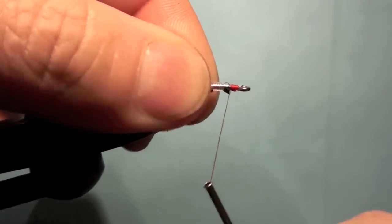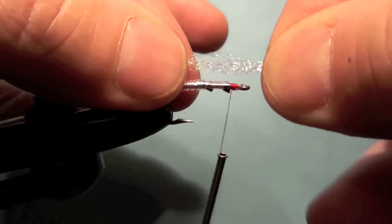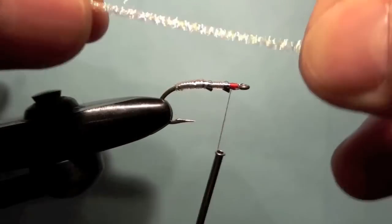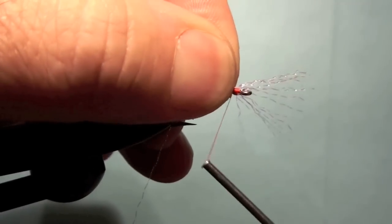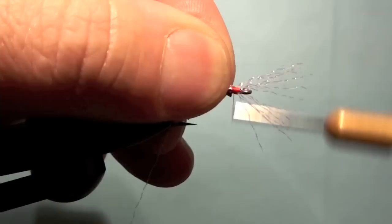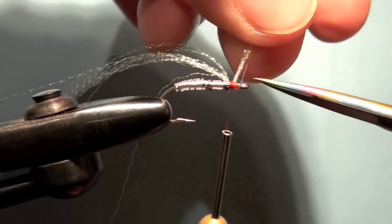And then we're going to take a little bit of pearl crystal flash. I don't know, four or five strands. This is pretty shiny stuff. Shows up well in the water. Just go ahead and bind that on. I leave the tag ends long for a reason so that I can just grab those and snip them off without no problem.